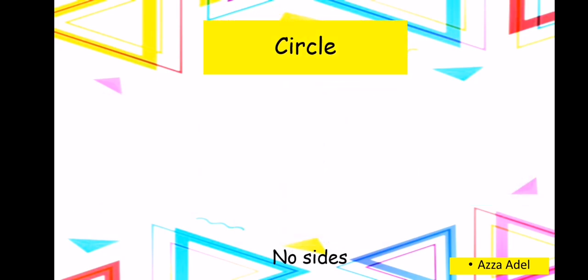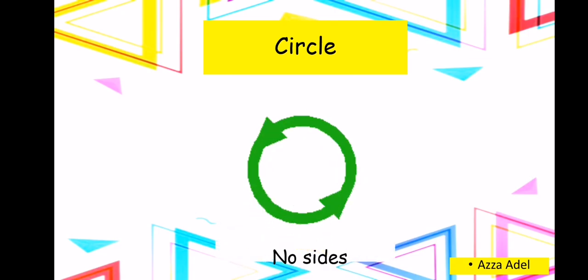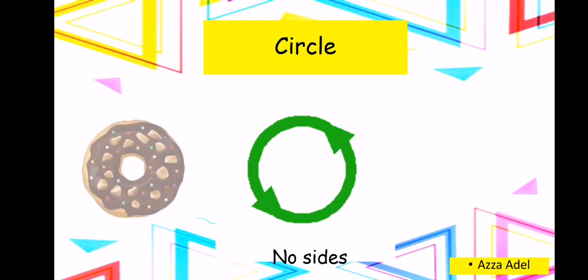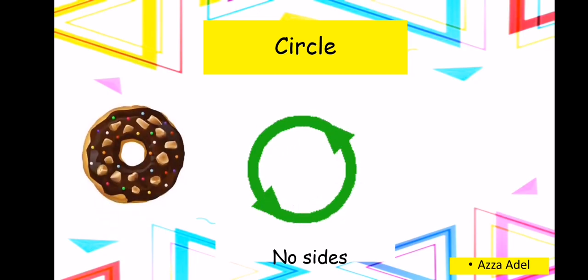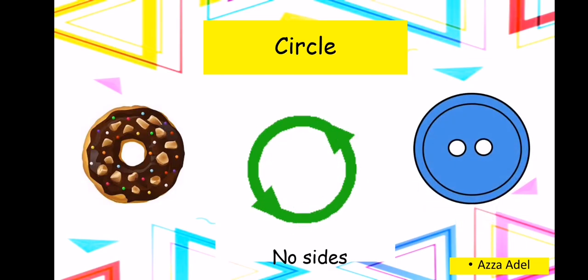Circle. A circle is a rounded shape. Can you draw a circle on a paper? Donuts look like a circle, and so does a button. Can you look around you and find something that looks like a circle? It doesn't have sides.